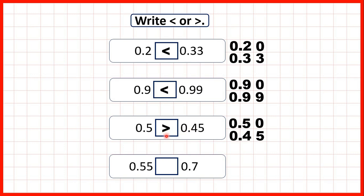It's easy to get confused on this question because with 0.45 we have two digits after the decimal point. But remember the first digit always tells us how many tenths we have, and tenths are 10 times larger than hundredths. So it doesn't matter that this number has 5 hundredths, because 0.5 has an extra tenth.